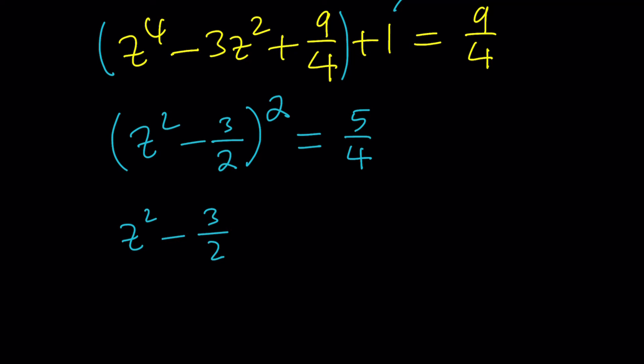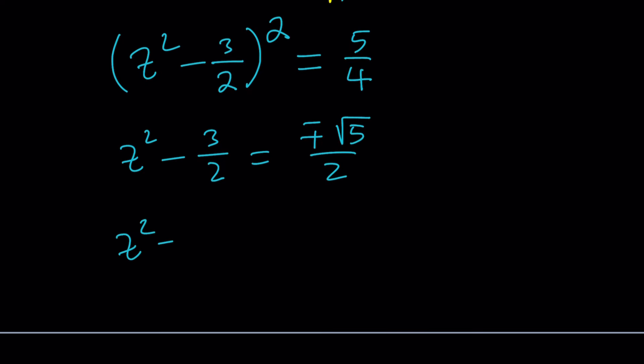Now we get z squared minus 3 over 2 equals plus minus root 5 over 2, and then by adding three halves to both sides we're going to get z squared equals 3 plus minus root 5 over 2.